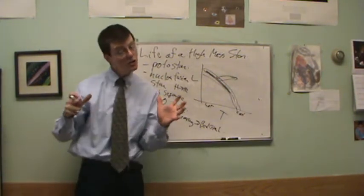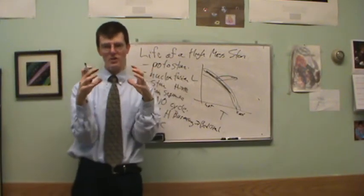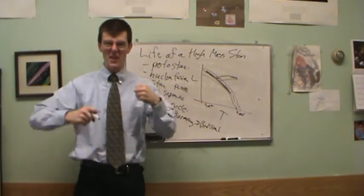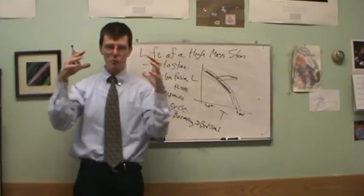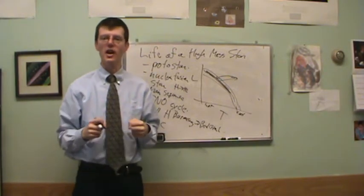And for a low mass star, that's the end of the line. Once you've got your carbon, then that electron degeneracy pressure prevents you from compressing more. High mass stars don't have that problem. They have enough mass, they have enough pressure, and all this sort of thing crushing the stuff in their center that now they can ignite carbon.